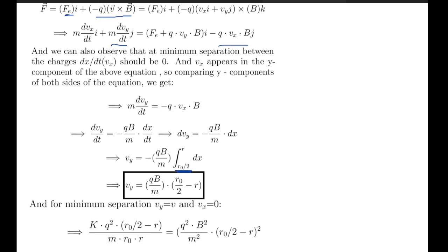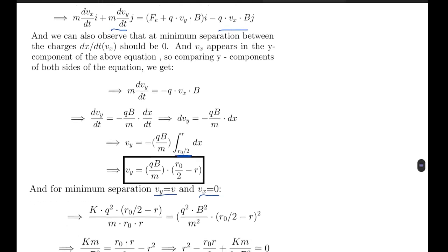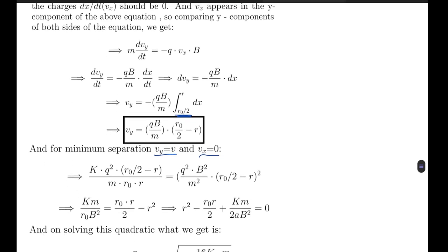And for minimum separation, as vx equals to zero, vy should be equals to v. So from here, from the first equation we got K q squared times (r naught by 2 minus r) over m r r naught, which is v squared, should be equals to q squared B squared by m squared times (r naught by 2 minus r) whole squared. So from here what we get is Km by r naught B squared equals to r naught r by 2 minus r squared.